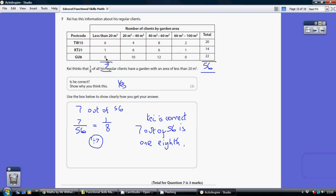Well it's these guys and these guys and these guys. Add those up and we get 7. So 7 clients have a garden of less than 20 metres squared.